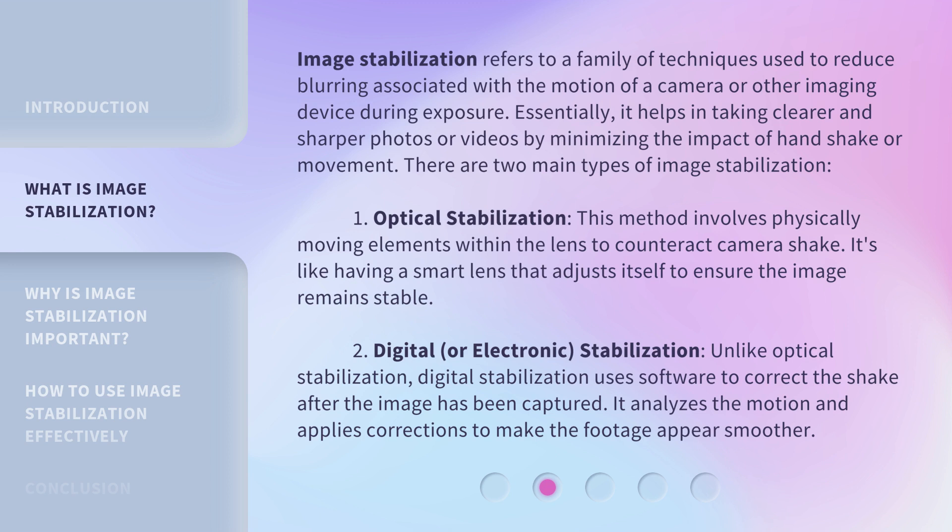There are two main types of image stabilization. One: Optical Stabilization. This method involves physically moving elements within the lens to counteract camera shake. It's like having a smart lens that adjusts itself to ensure the image remains stable.